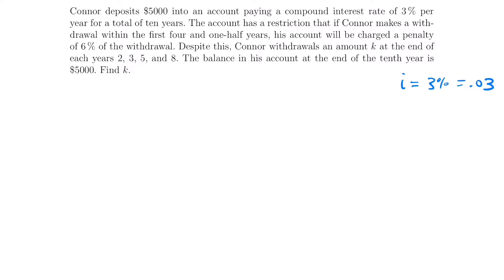This problem involves Conor starting with $5,000, making some withdrawals, and ending with a certain amount — nothing different except for the penalty. You always start these problems the same way: draw a timeline. We're working with 10 years total, so I'll draw a timeline from t equals 0 to t equals 10, divided into each year. In particular, we're interested in years 2, 3, 5, and 8 when he makes withdrawals, so we'll label those on the timeline.